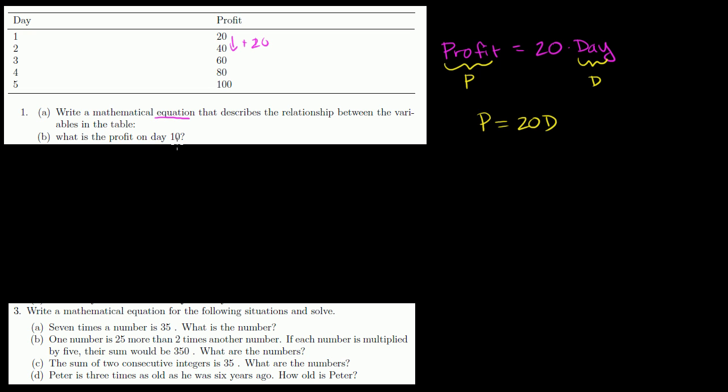And then part B, they say, what is a profit on day 10? Well, lucky for us, we've written our equation. So you're essentially just saying, well, what happens to P, profit, when D or day is equal to 10? So profit is going to be equal to 20 times the day we're on. Day 10. 20 times 10, which is equal to 200. That's it.